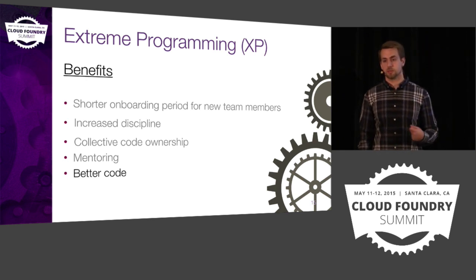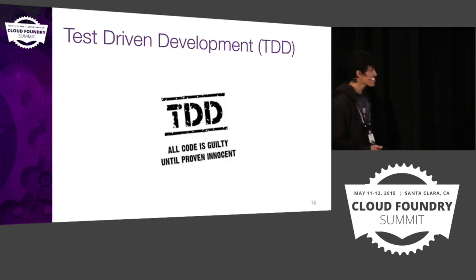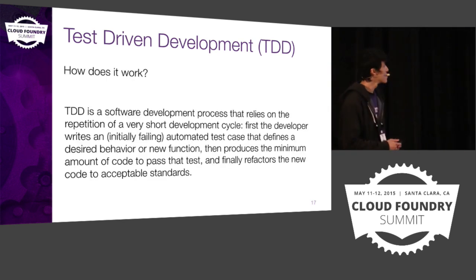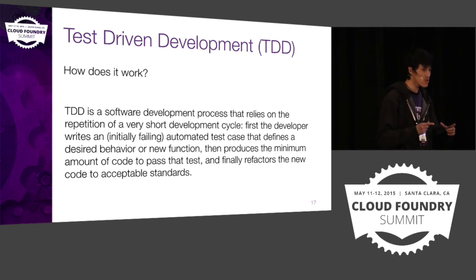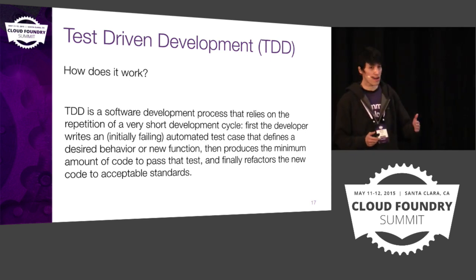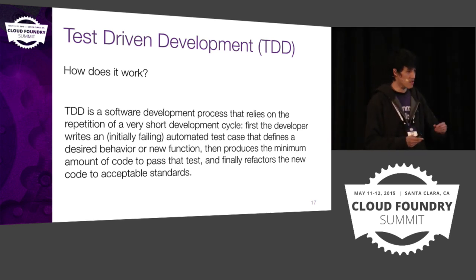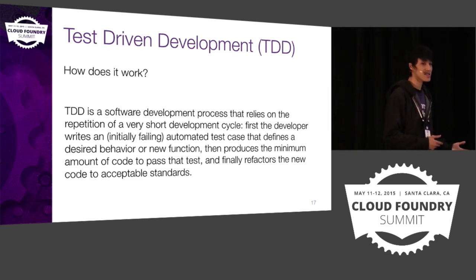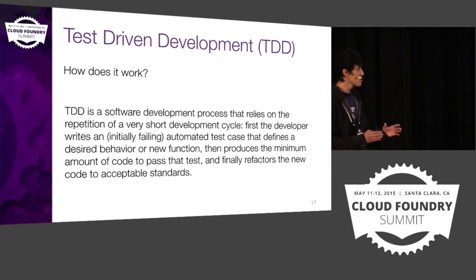So, TDD — what is it? TDD is a programming technique where the main goal is to create good code that actually works. It's a software development process that relies on a very short development cycle. First, the developer writes a test that defines the behavior or new function. Then the developer produces just enough code to make the test pass. With the test passing, you can then reshape or refactor the code to a better standard and design. That's the full short cycle of TDD.